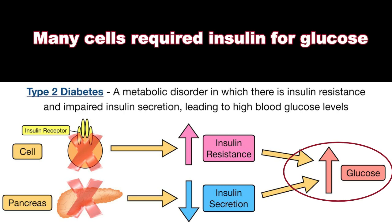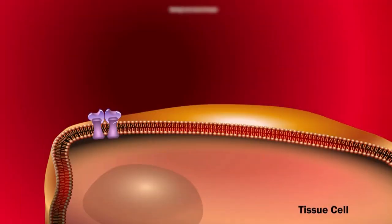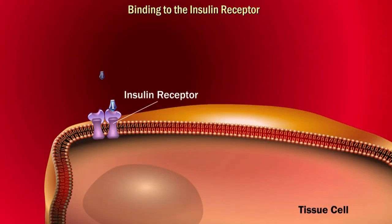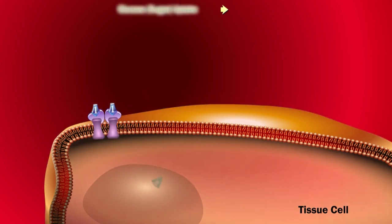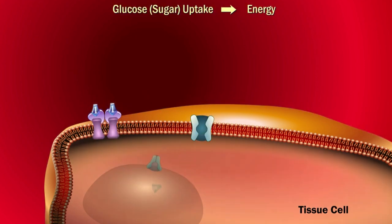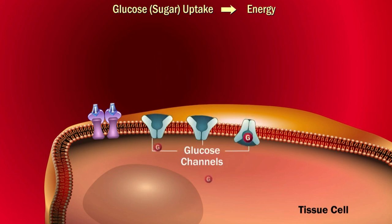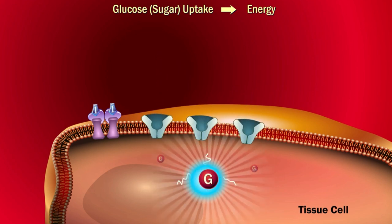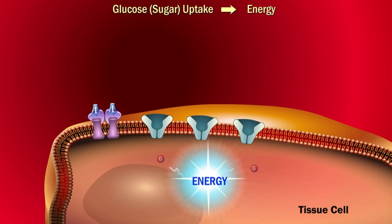Many cells require insulin for glucose uptake. In other words, insulin helps transport glucose from the blood into a cell. Once inside the cell, glucose can then be used as energy or fuel for the cells. Without insulin, glucose remains in the blood and blood glucose level increases.